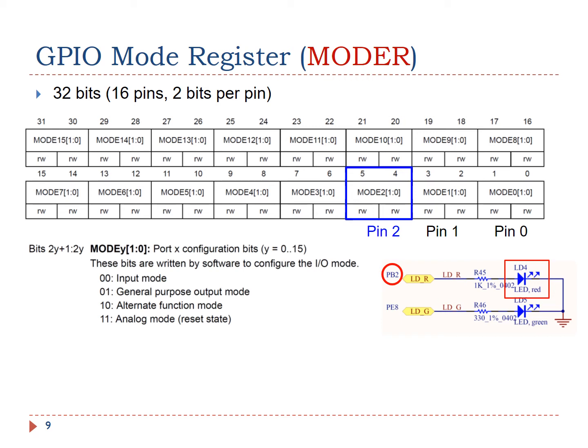The function of a pin is controlled by the mode register of this port. Each mode register has 32 bits. Port B has a total of 16 pins. The function of each pin is determined by two bits of the mode register. For example, bit 5 and bit 4 control the function of pin 2. When these two bits are 00, the pin is set as digital input.